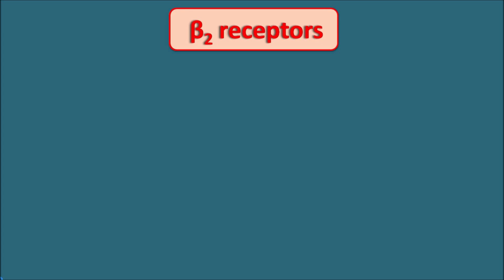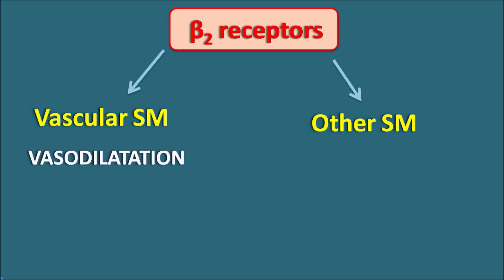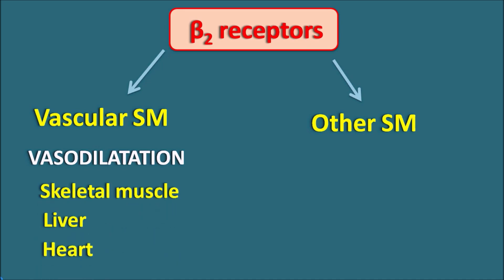Next are the beta-2 receptors. Beta-2 receptors are mainly present on smooth muscle, and we can classify them into two types: those present on vascular smooth muscle and those on other smooth muscles. Beta-2 receptors produce their predominant action on only a few vascular smooth muscles, where they produce vasodilation — because beta-2 receptors are coupled with an increase in cyclic AMP, which when elevated in smooth muscle produces relaxation. These beta-2 receptors produce vasodilation only in blood vessels supplying skeletal muscle, liver, and heart. In other systemic blood vessels, beta-2 receptors are still present but not predominant; only alpha-1 receptors are predominant, producing vasoconstriction.